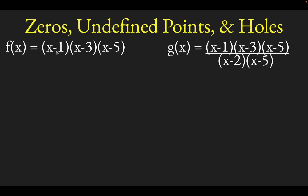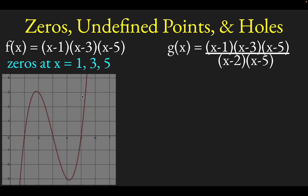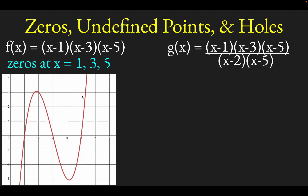As you may know, if any of these factors are zero, then the function itself, the entire thing, will be zero. So what this means is there are zeros of this function at x equals 1, x equals 3, and x equals 5. If you graph that function, as I've done here, you can see that indeed we get the zeros at x equals 1, x equals 3, and x equals 5.